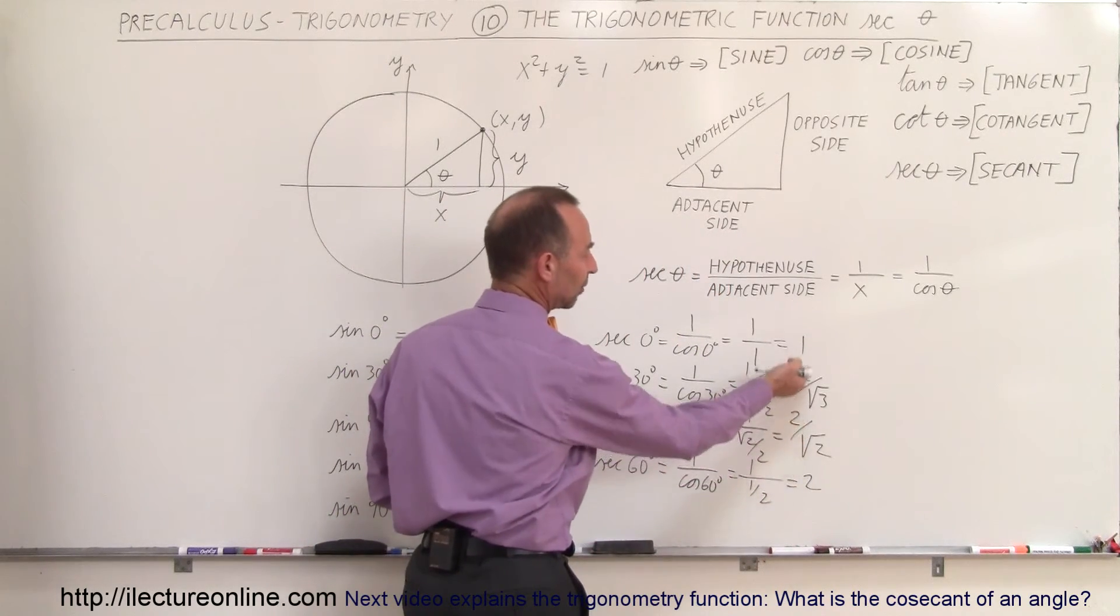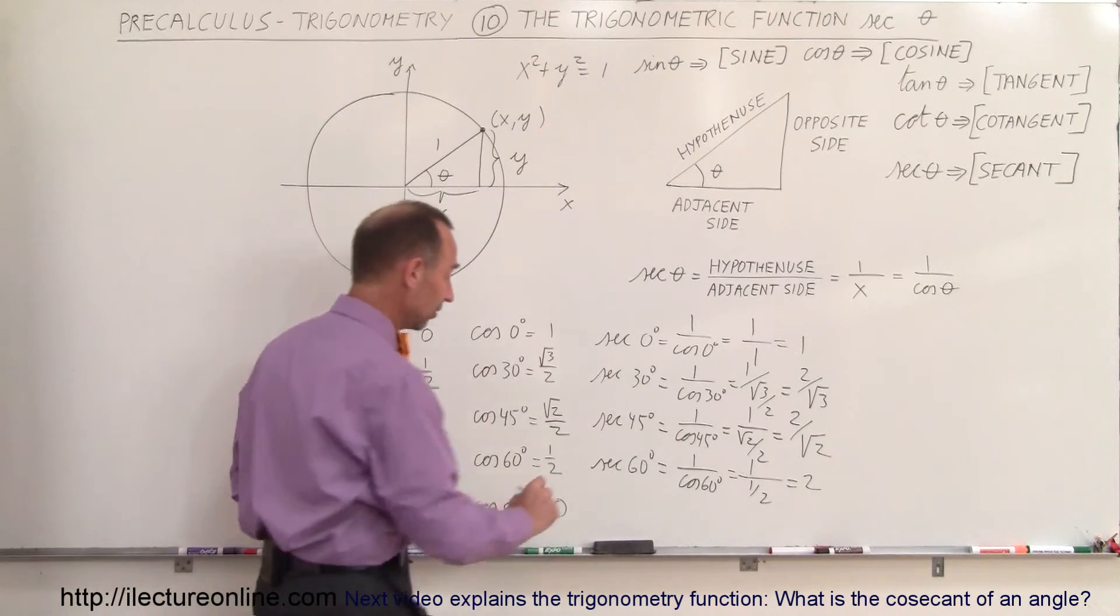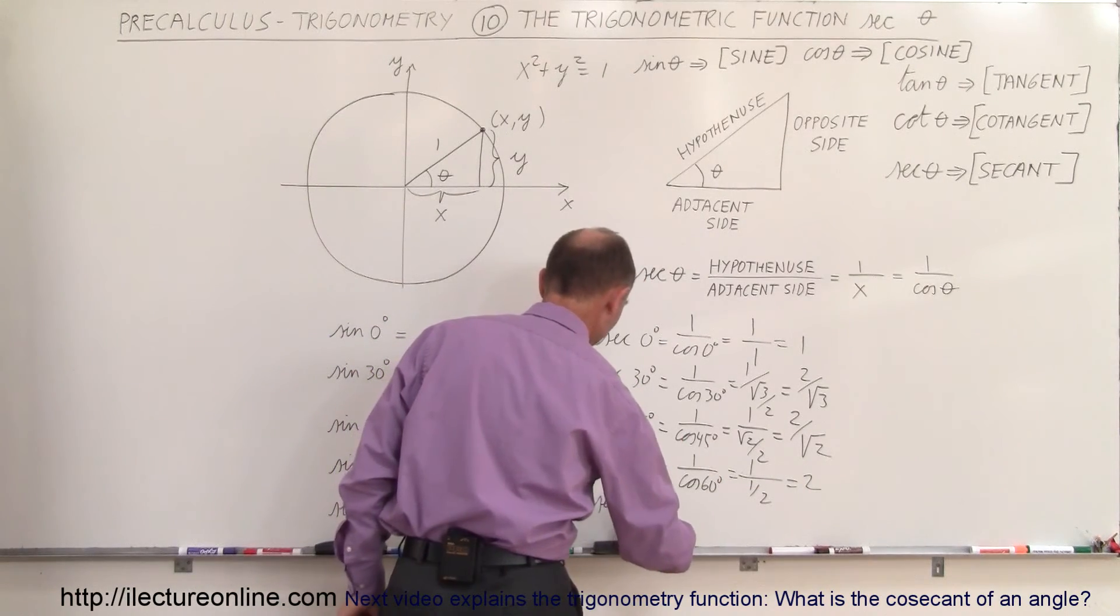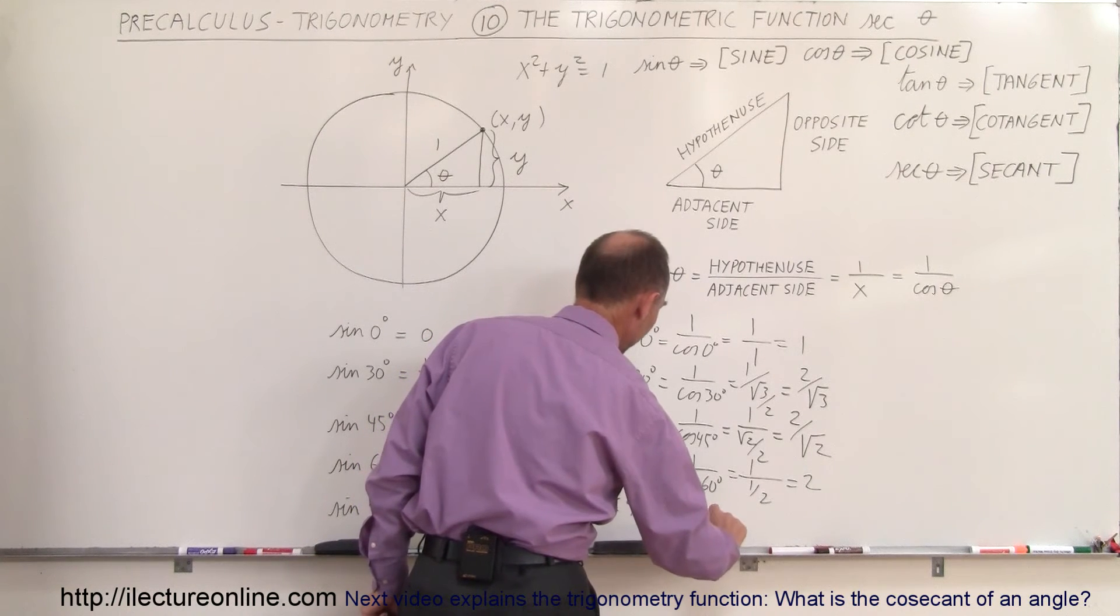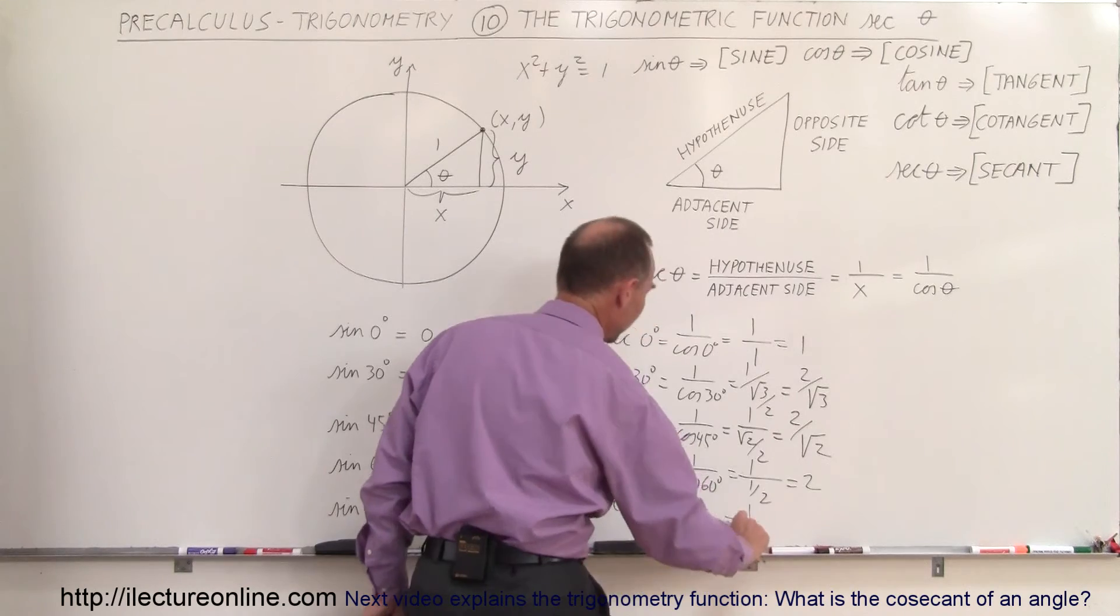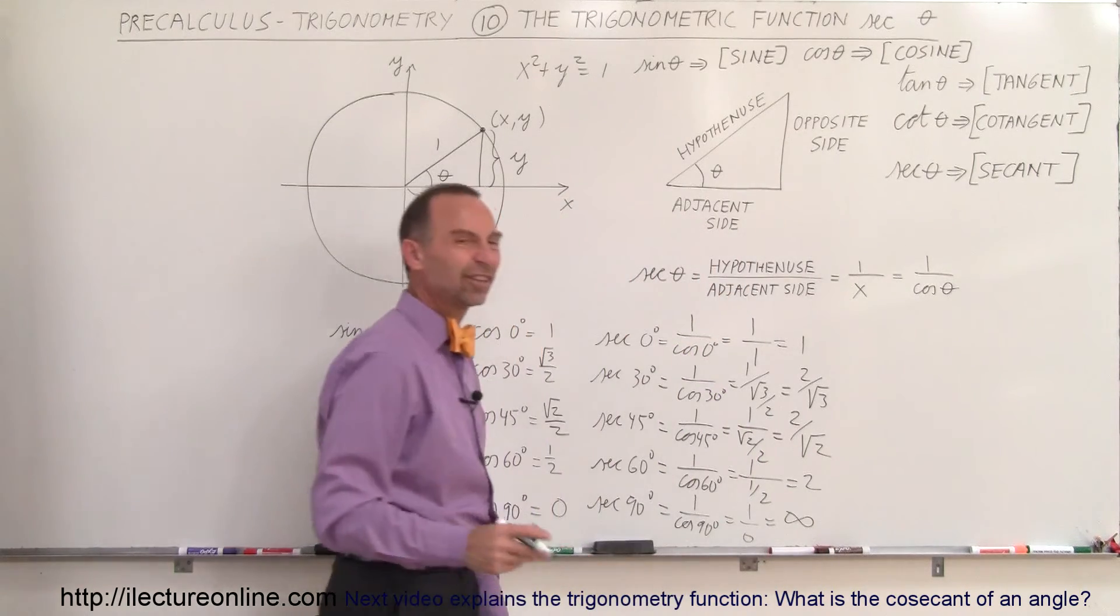So you can see that as you're dividing by smaller numbers, you get bigger and bigger numbers. Eventually you go from 1 to 2, and finally, when we take the secant of 90 degrees, that's equal to 1 divided by the cosine of 90 degrees, which is 1 divided by 0, which is infinity—of course, that's undefined.